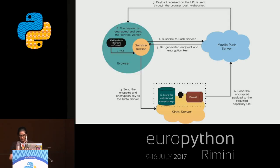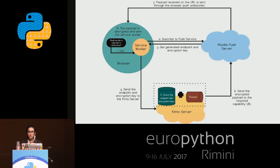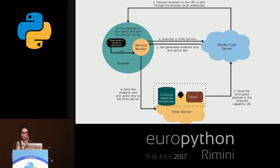The push server then sends it across to the browser using a UA ID. A UA ID is the user agent ID with which a push server recognizes a particular browser. The browser routes it to the particular service worker using a channel ID. If the user is not online at that time, the push server will queue up the message for a particular amount of time called the TTL — the time-to-live header — which must be pre-specified by the web application server.